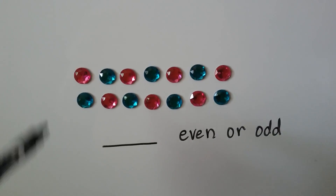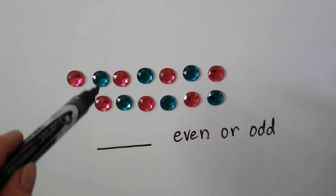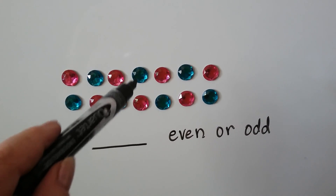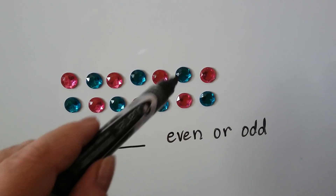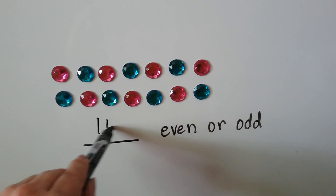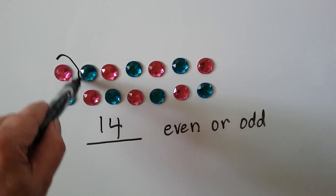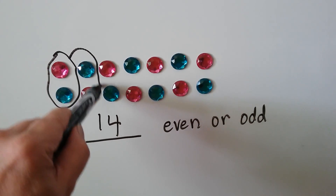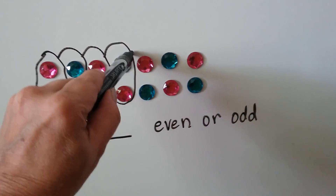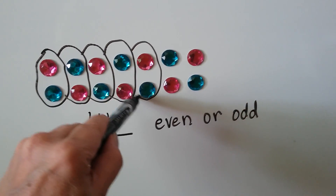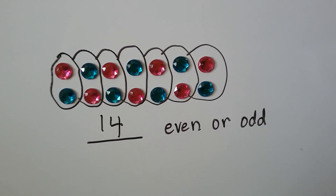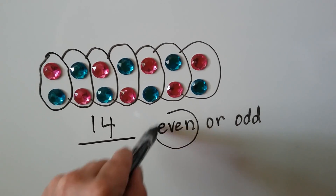How about this one? There's 1, 2, 3, 4, 5, 6, 7, 8, 9, 10, 11, 12, 13, 14. We can make pairs — there's none left over, so it's even.